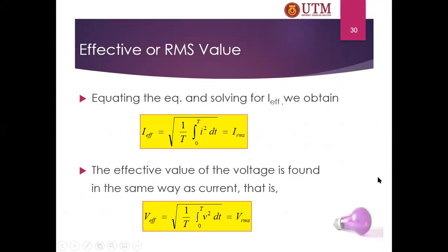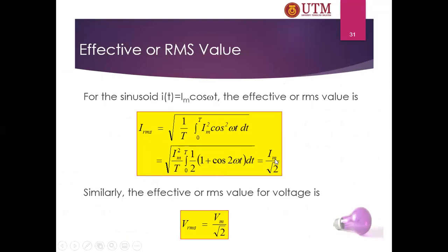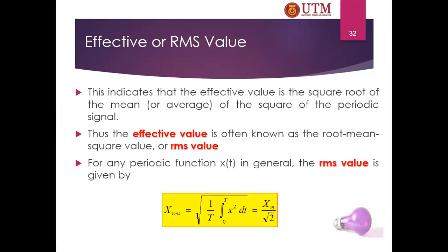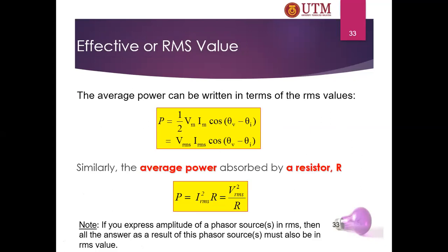As summarized in this slide, I_rms = I_max / √2 and V_rms = V_max / √2. The average power equation is (1/2) V_m I_m cos(θ_v − θ_i), and this can also be written in RMS terms as: P = V_rms × I_rms × cos(θ_v − θ_i).